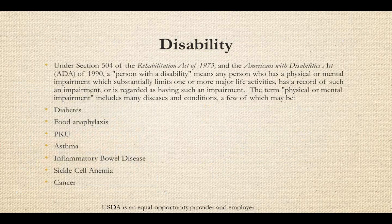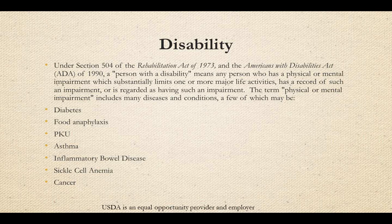Let's take a closer look at the term disability as it refers to civil rights and child nutrition programs. This slide indicates the term disability as defined in the Americans with Disabilities Act of 1990. A person with a disability means any person who has a mental or physical impairment which substantially limits one or more major life activities, has a record of an impairment, or is regarded as having such an impairment. The term physical or mental impairment includes many diseases and conditions, a few of which may be diabetes, food anaphylaxis, PKU, asthma, inflammatory bowel disease, sickle cell anemia, or cancer.